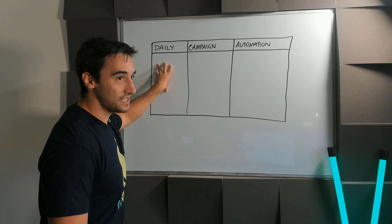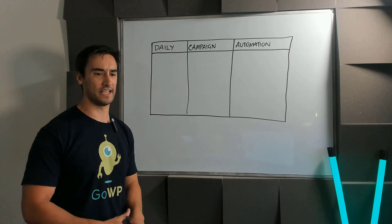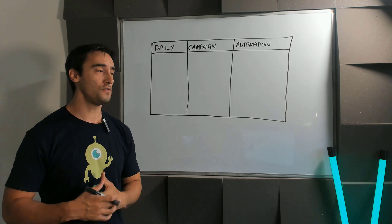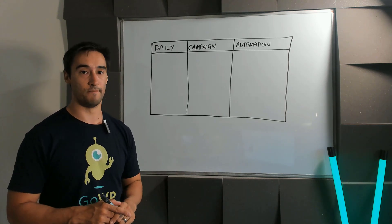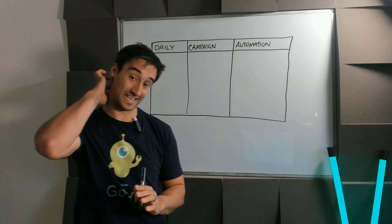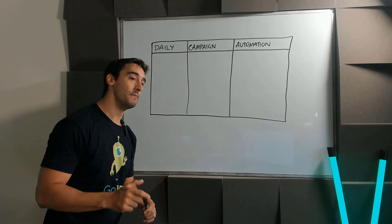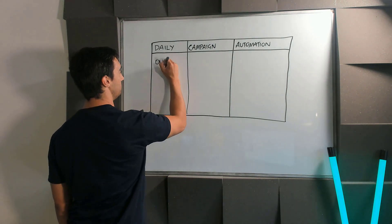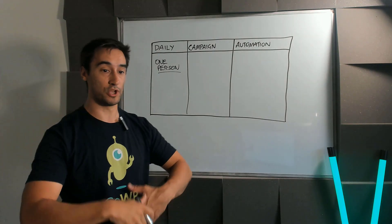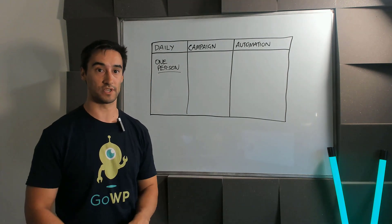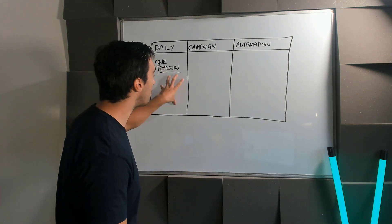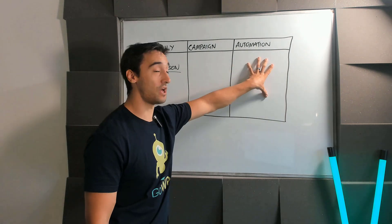A lot of people get upset when I tell them they need to start sending an email every single day. They say they're going to get unsubscribed, their customers are going to hate it — but why would they unsubscribe if you're useful and valuable? Think about what you would send to just one person if you were writing an email every single day. Don't try to email your entire list — what would you write to just one person? That's all you need to worry about with your daily email.